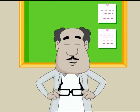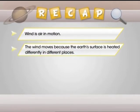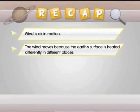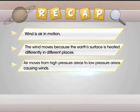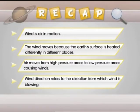Let's summarize. Wind is air in motion. The wind moves because the earth's surface is heated differently in different places. Air moves from high pressure areas to low pressure areas, causing winds. Wind direction refers to the direction from which the wind is blowing.